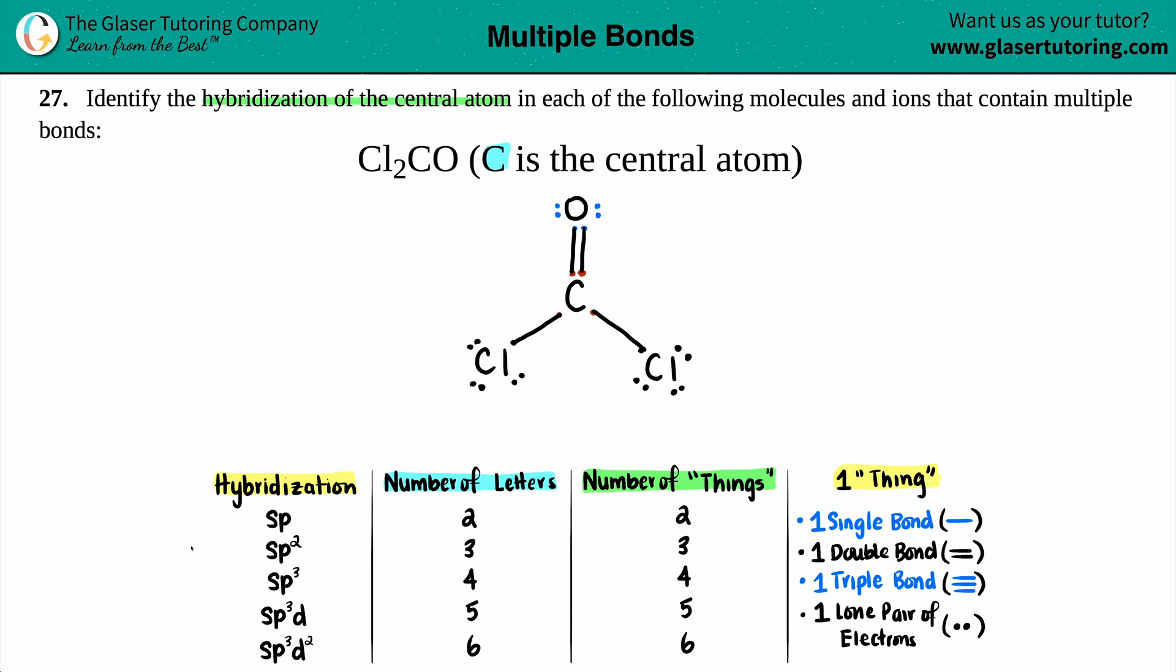But the easy way to remember this is it always corresponds to the number of letters that it has. So for example, an SP2 has one S and two Ps. There's a total of three letters here. If I tack on one more P, now I have SP3, and that's a total of four letters. And always the number of letters corresponds to the number of things around the atom. So two letters, two things. Three letters, three things.